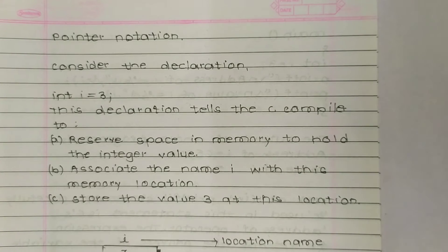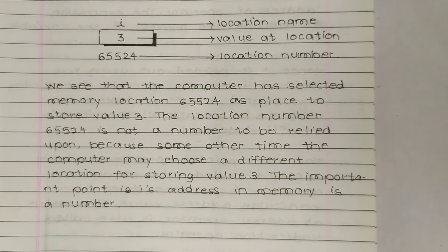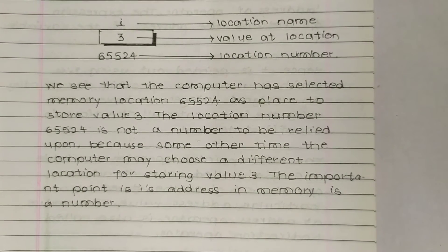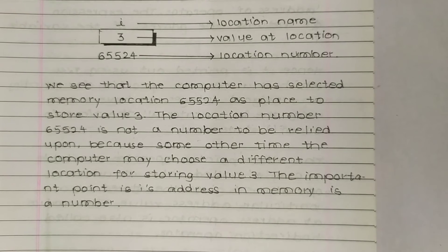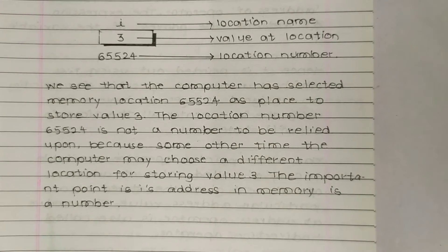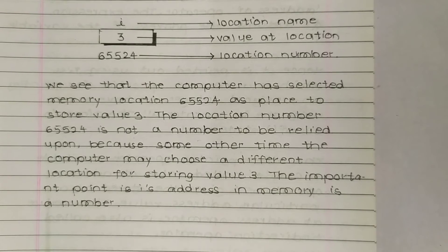C stores the value 3 at that location. Looking at the diagram: i is the location name, 3 is the value at that location, and 65524 is the location number. The computer has selected memory location 65524 as the place to store value 3. However, the location number 65524 is not a number to be relied upon.